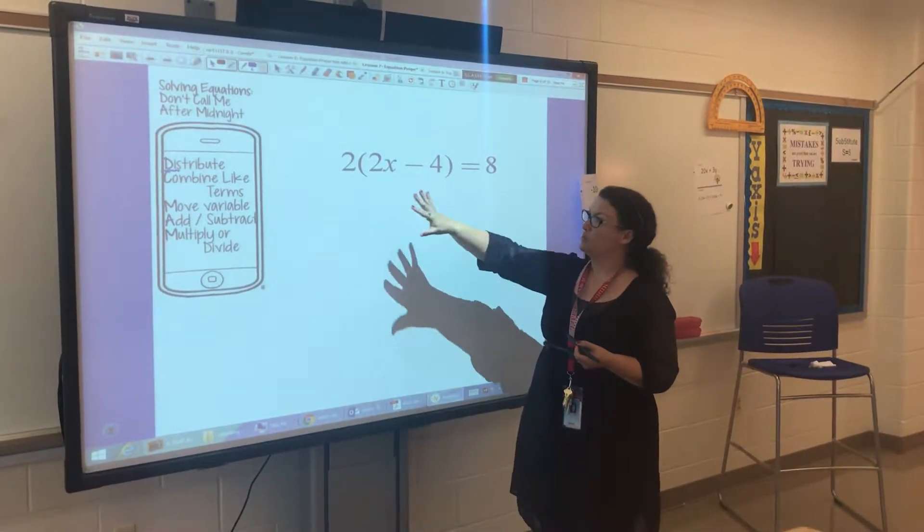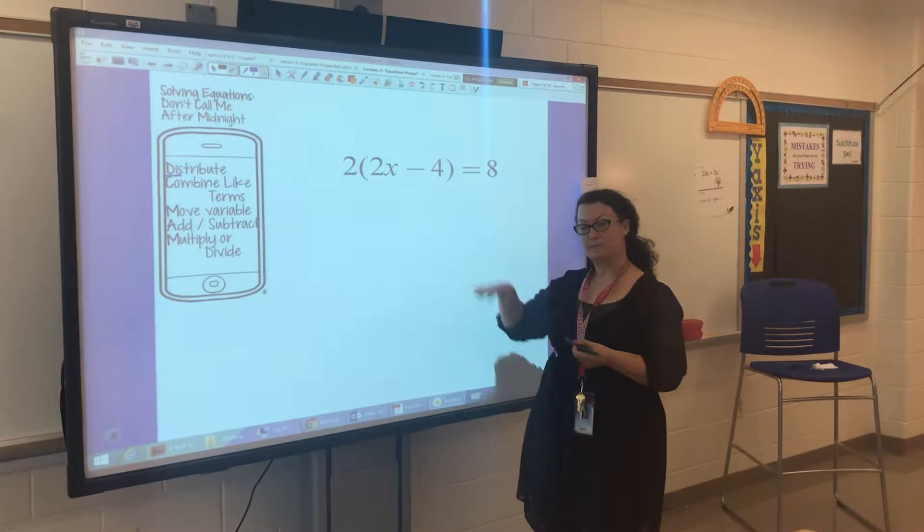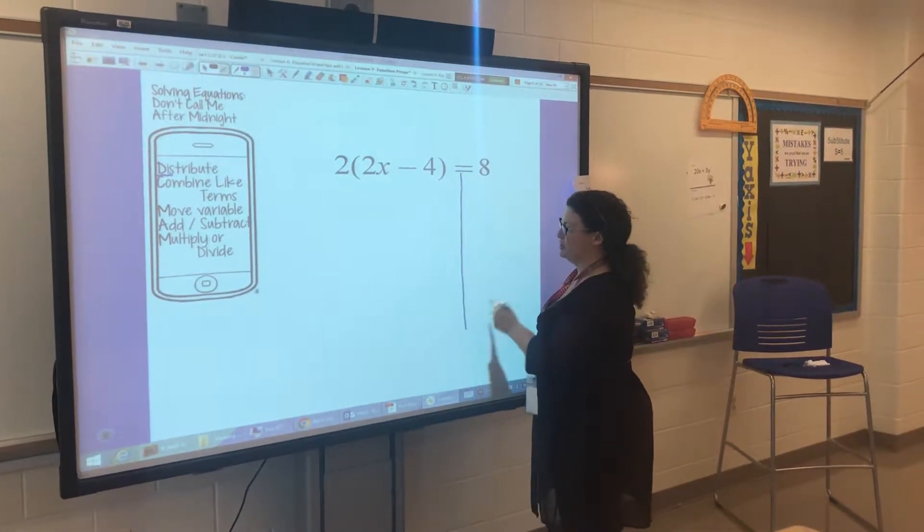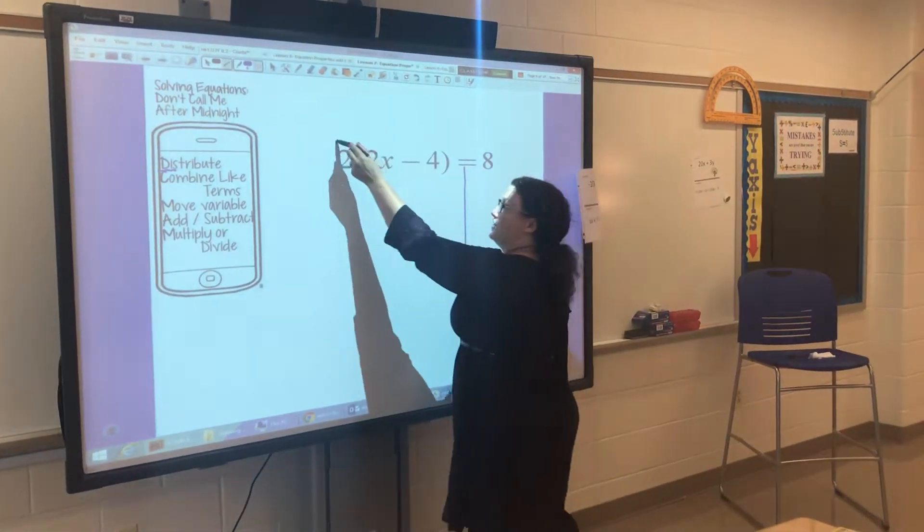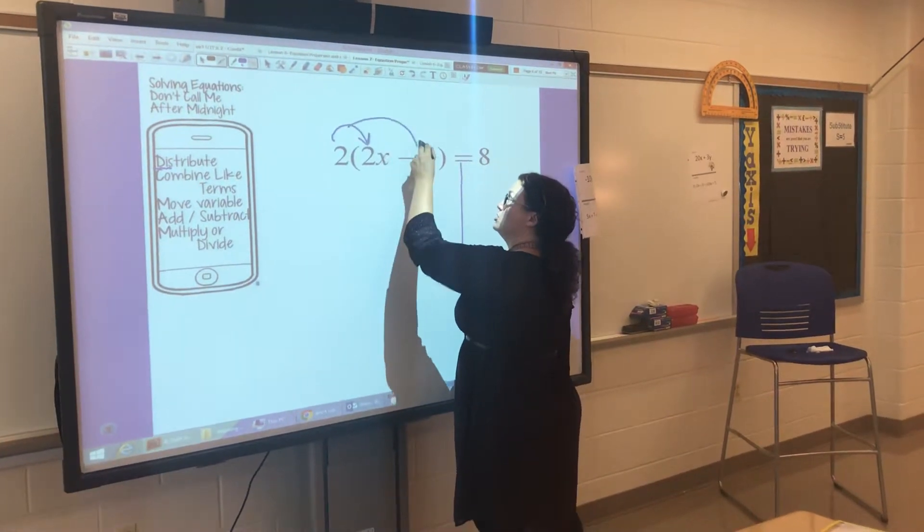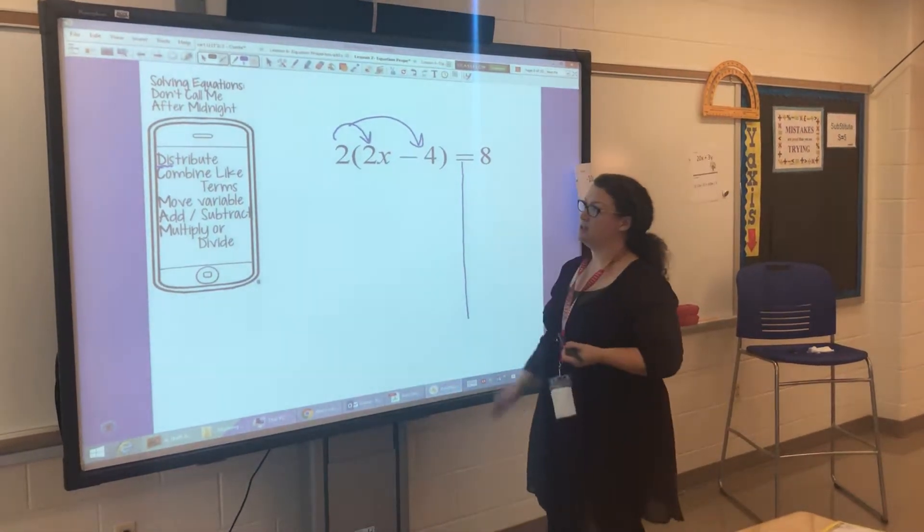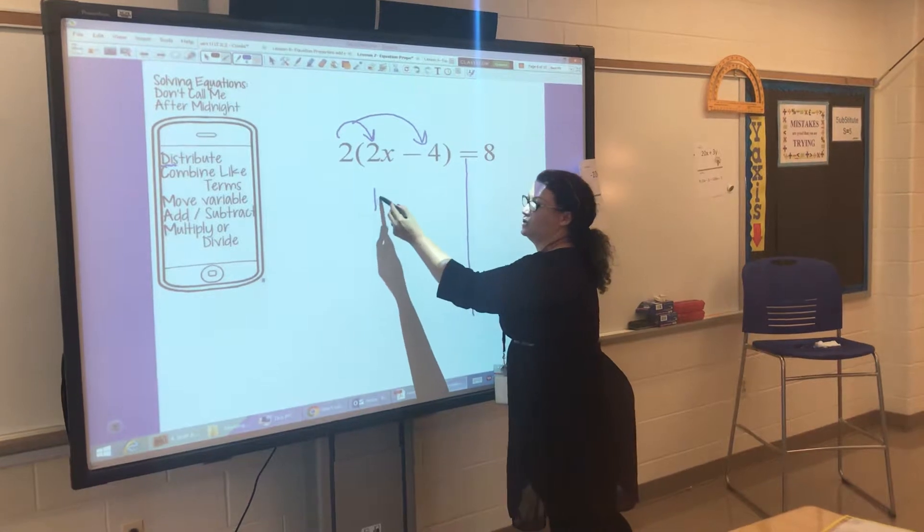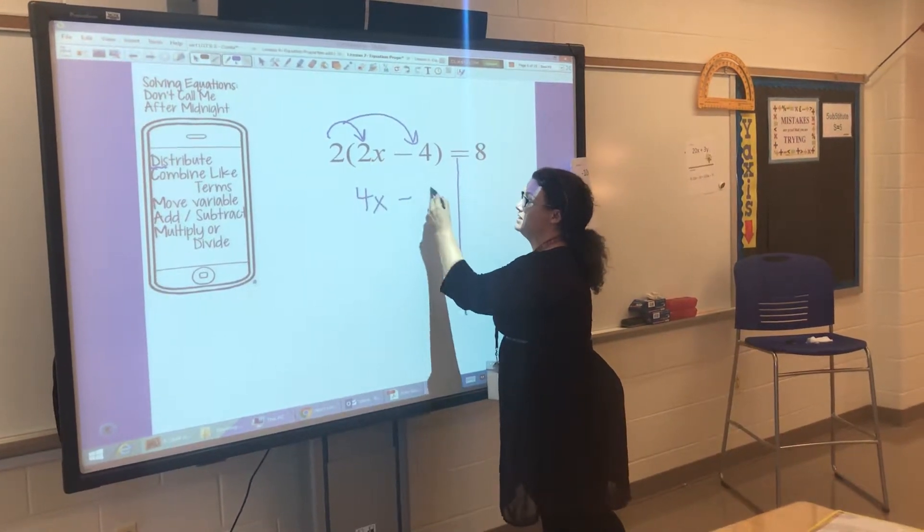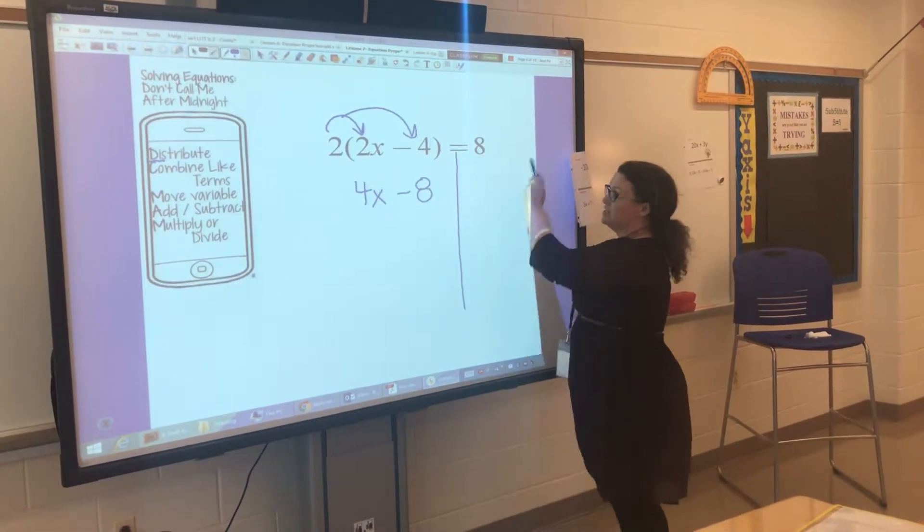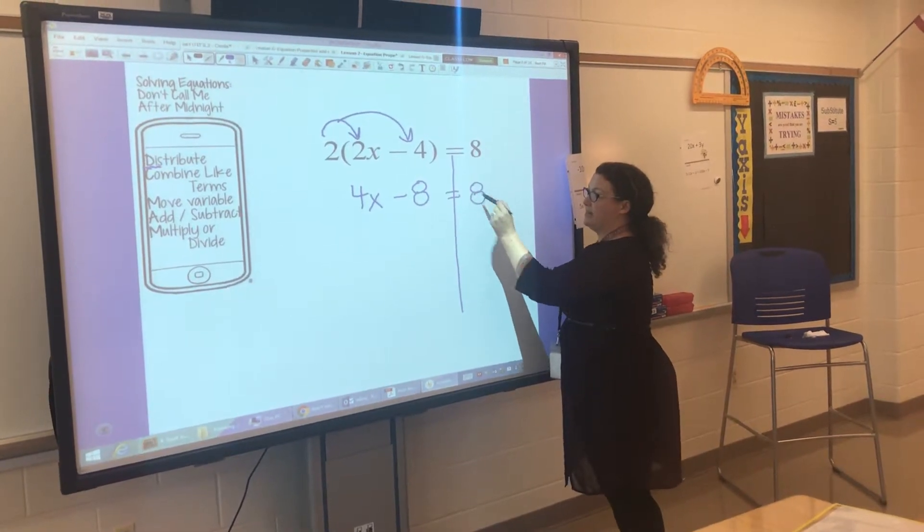In this problem, we do have parentheses. We do have something that needs to be distributed. I'm going to create my two sides of my equation, and then I'll distribute my 2 to what's inside my parentheses. That simplifies to 4x minus 8. There's nothing to distribute on the right-hand side, so that just stays the same.